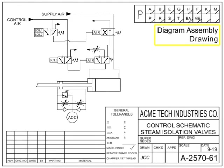A diagram assembly drawing shows installation of equipment using symbols and is often made in pictorial form. Diagram assembly drawings are typically used to depict wiring, piping, and other systems where scale models and dimensions are not required. Each part on a diagram assembly is indicated by a picture.